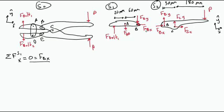By taking the sum of the forces in the x direction in S1, since FBx is the only force, we find that FBx is equal to 0. This is crucial because it makes our analysis of S2 simpler.